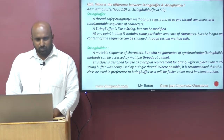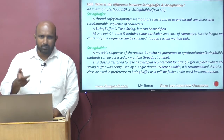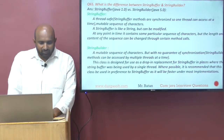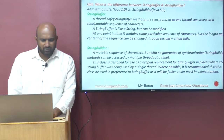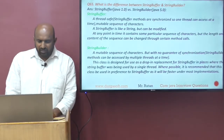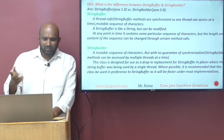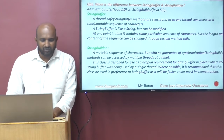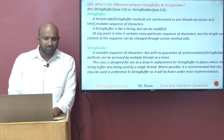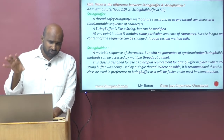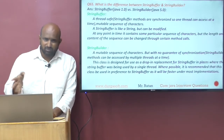Both StringBuffer and StringBuilder are a mutable sequence of characters — both can be modified. They are like a String but can be modified. At any point in time, they contain some particular sequence of characters, but the length of the data frequently changes depending on method calls. The only difference is that both are mutable sequence of characters.